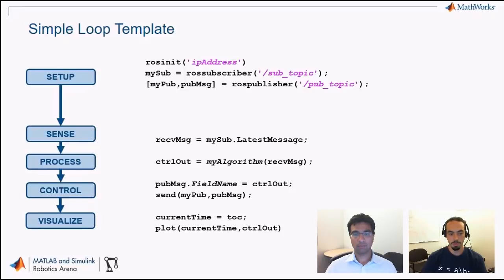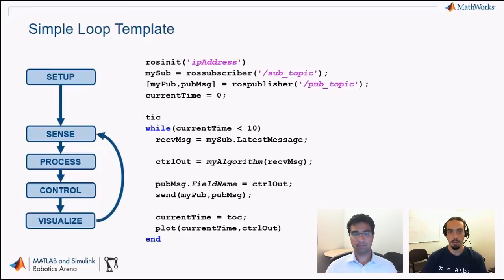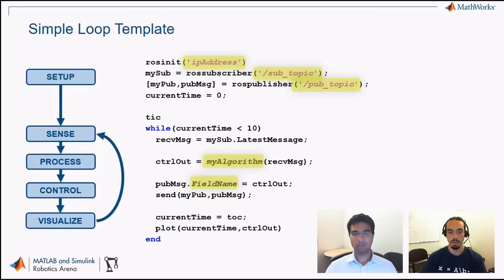The sense-process-control-visualize loop should run continuously on your robot. In the simplest template, we stick that into a while loop — grabbing elapsed time and running the algorithm until, say, 10 seconds have passed. Most of this is actually valid MATLAB code. As long as you know the IP address, the topic names, and write your algorithm, you can fit it into this template and get MATLAB code working fairly quickly.